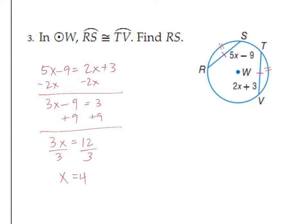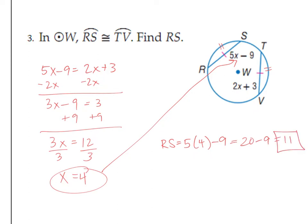And I think you get X equals 4. However, that is not our final answer. We have to take that 4 and plug it in for RS. So we will plug it in right there. The distance from R to S is 5 times 4 minus 9, which is 20 minus 9, which is 11.